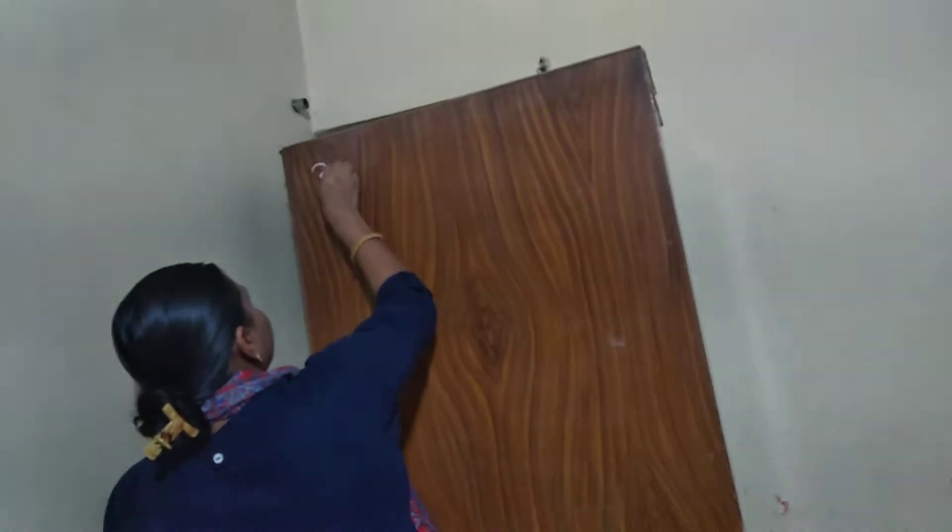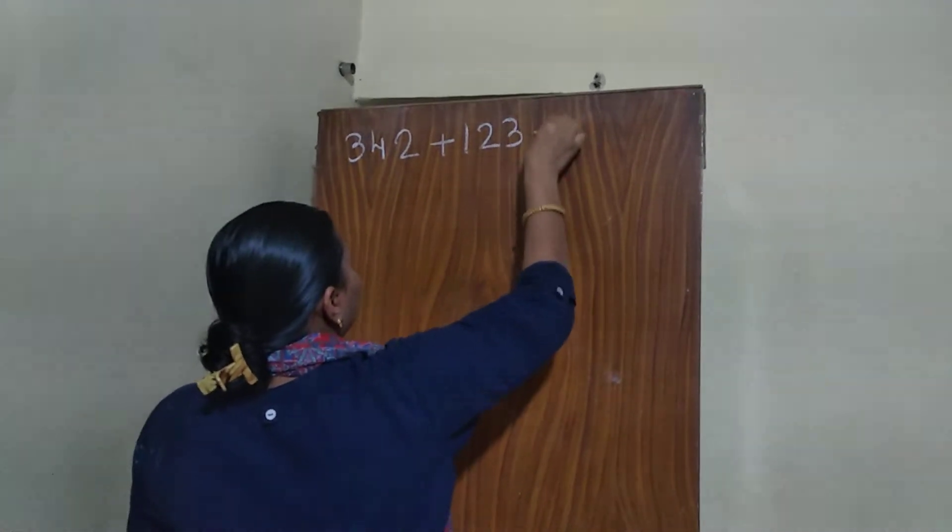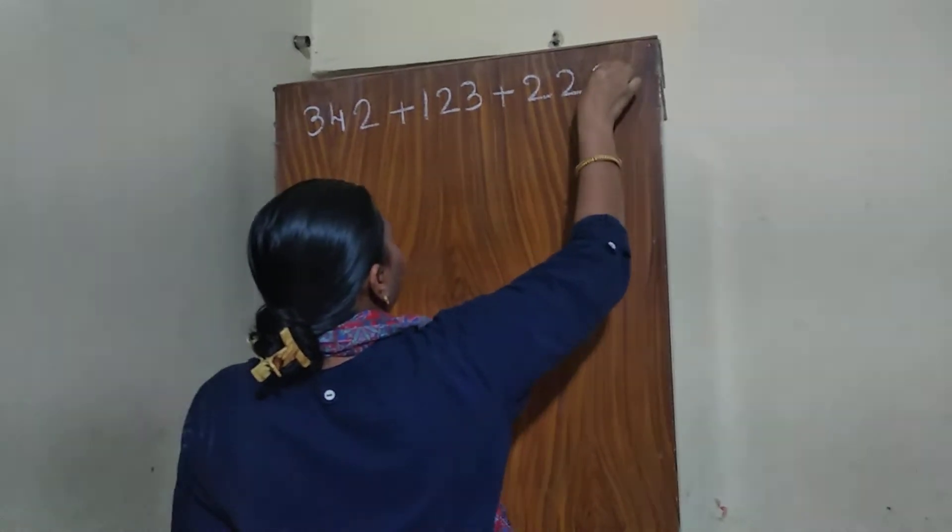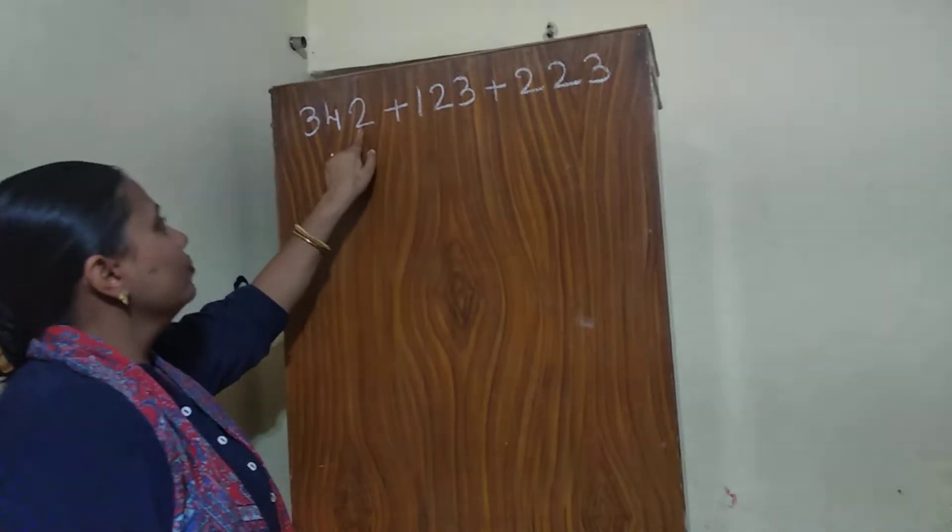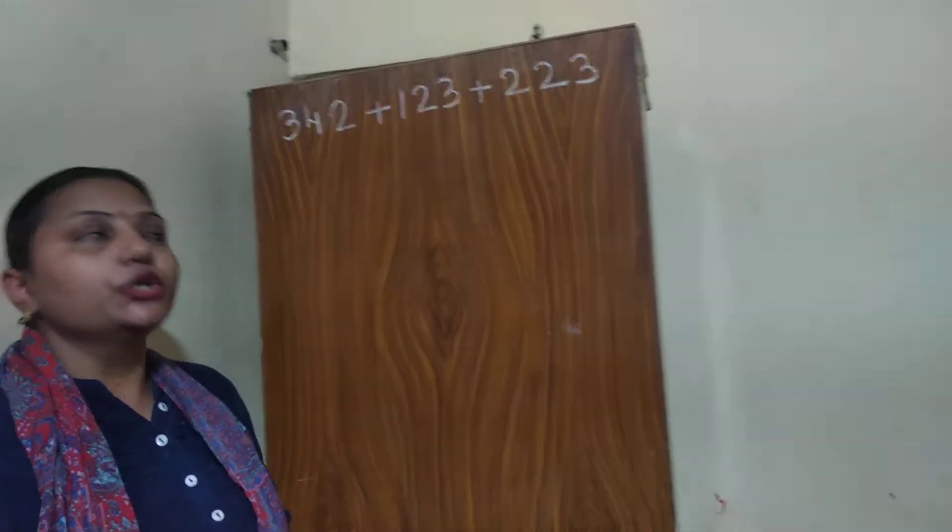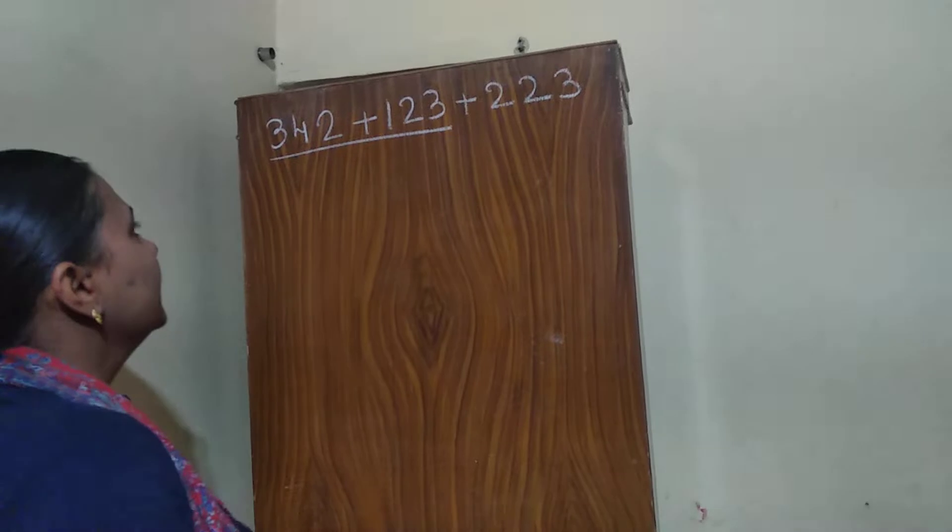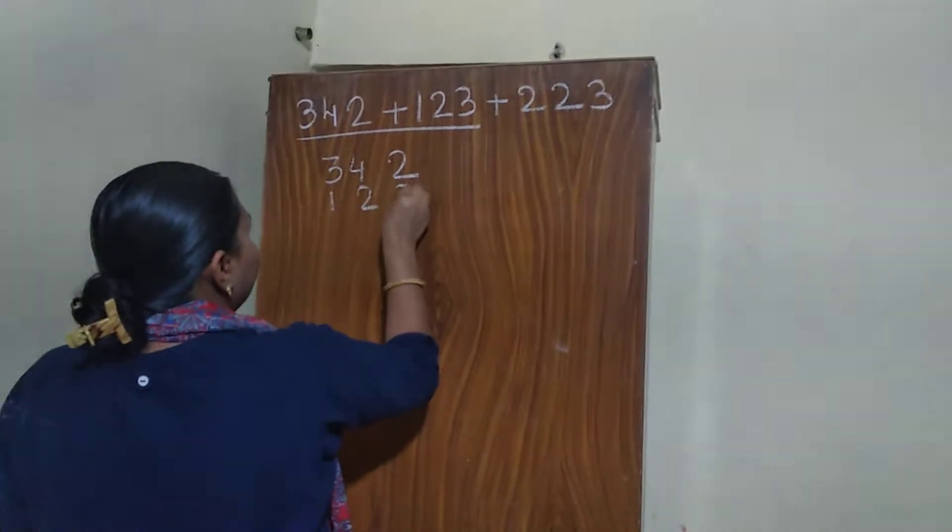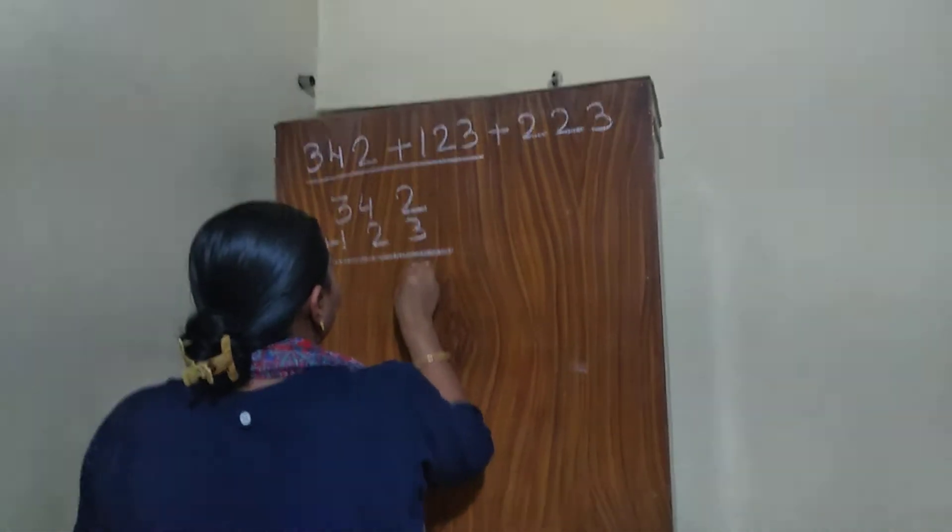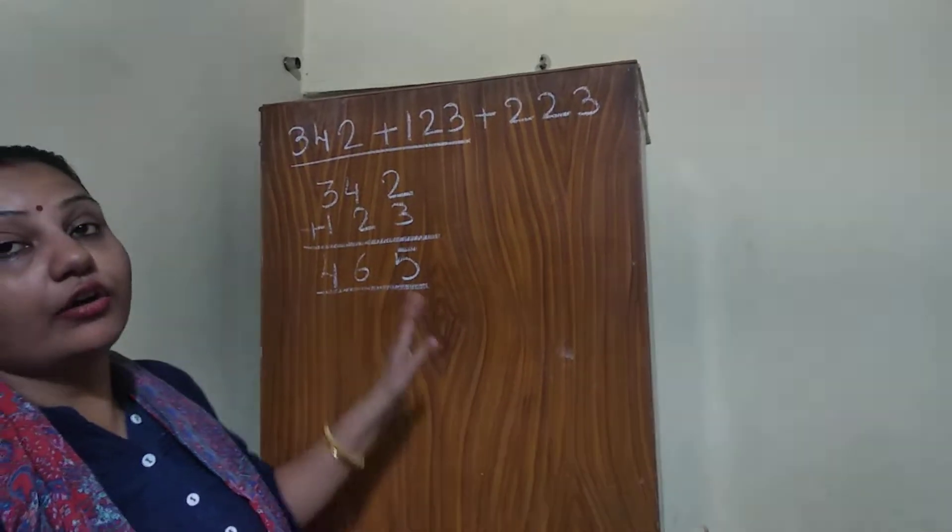Now, let us take another example, that is 342 plus 123 plus 223. Now, how many addends are there? 3 addends. Now, if I will add these 2 numbers first, then the answer is 465, but this is not final answer.